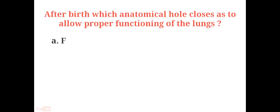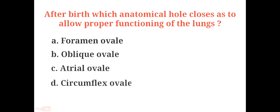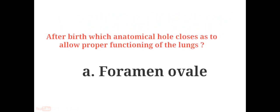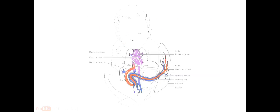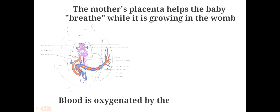After birth, which anatomical hole closes to allow proper functioning of the lungs? A. Foramen ovale, B. Oblique oval, C. Atrial oval, D. Circumflex oval. The answer is A. Foramen ovale. The foramen ovale is an important structure in the fetal heart, allowing blood to flow directly into the left atrium from the right atrium. Since the fetal lungs do not breathe in the womb, blood is oxygenated by the maternal lungs and flows directly to the left atrium.